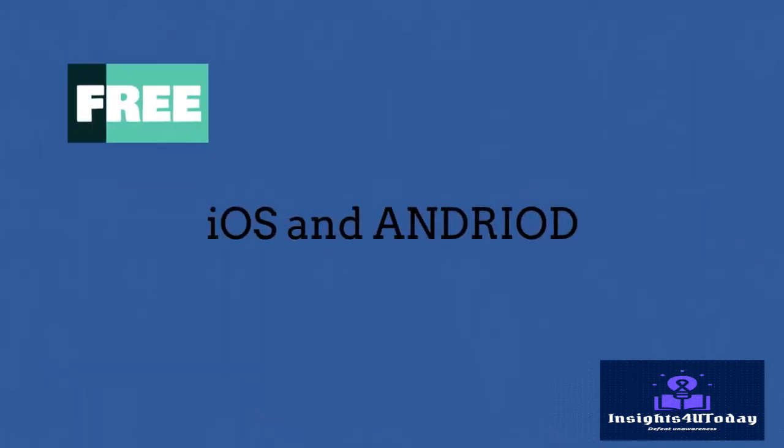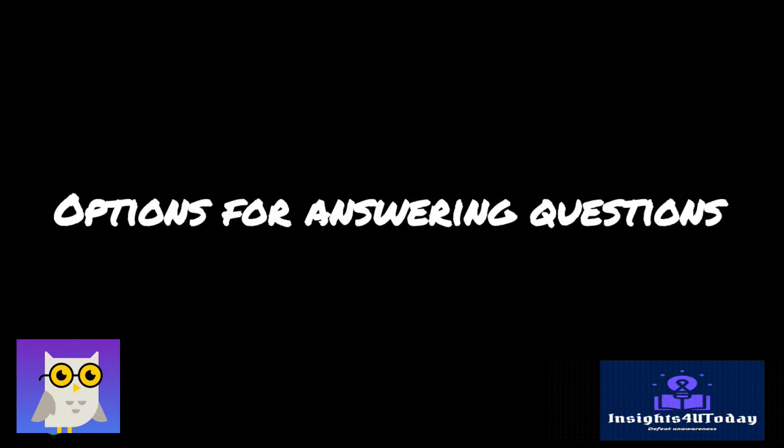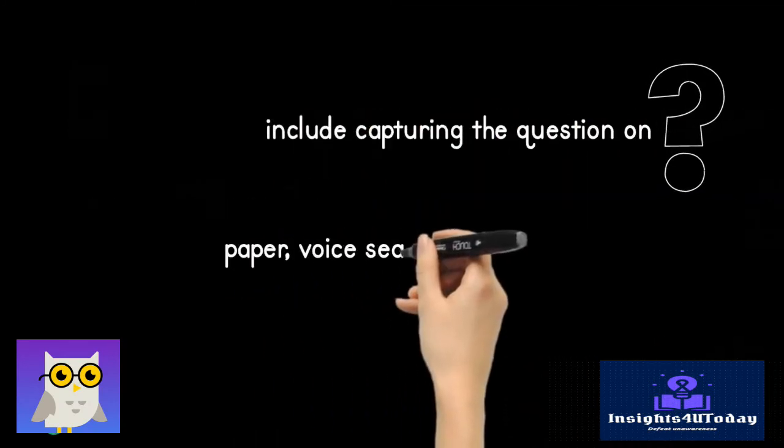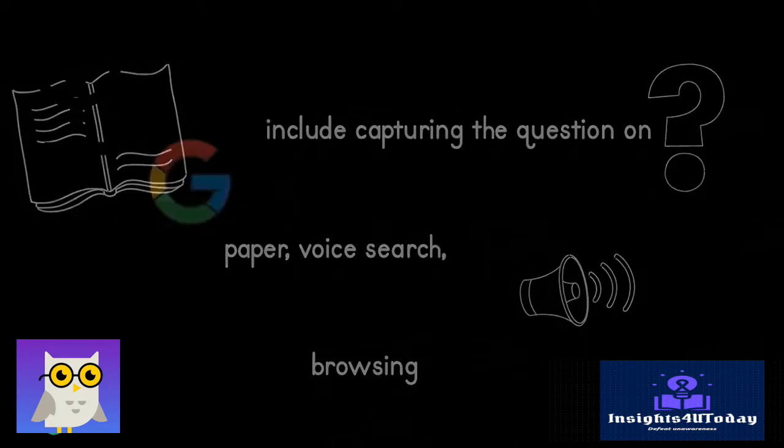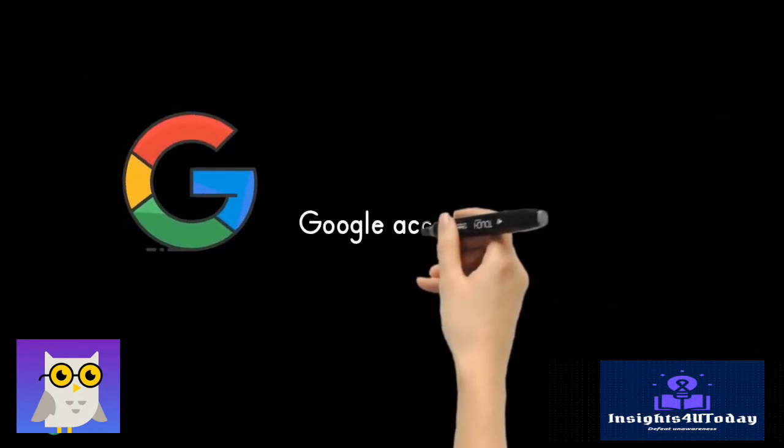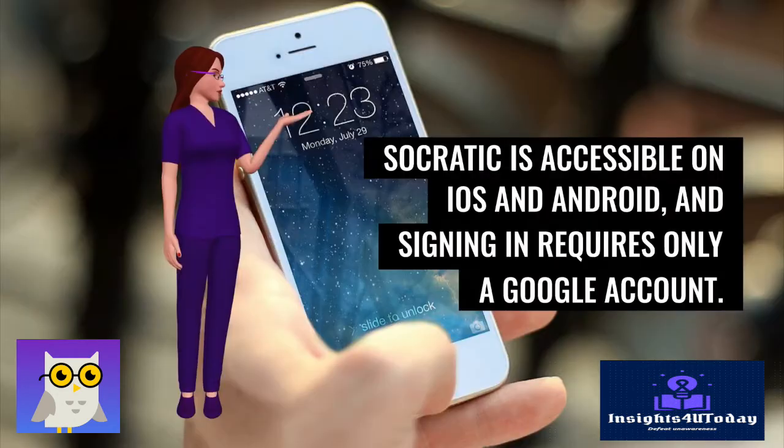The Socratic app is 100% free to download for iOS and Android devices. Options for answering questions include capturing the question on paper, using voice search, or simply browsing the site for topics. Socratic is accessible on iOS and Android, and signing in requires only a Google account.